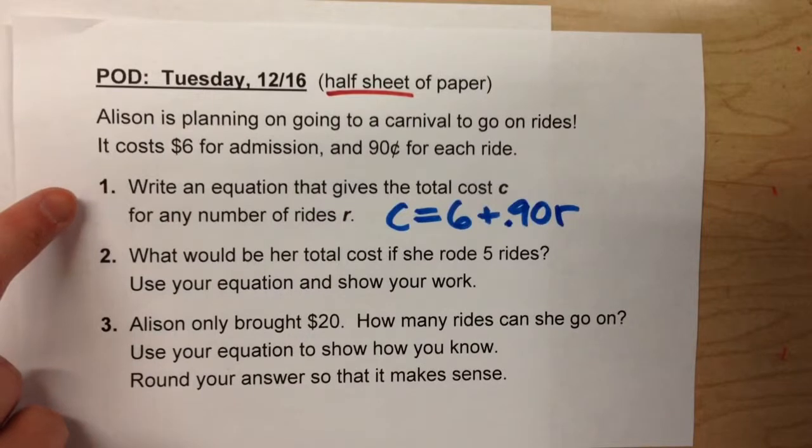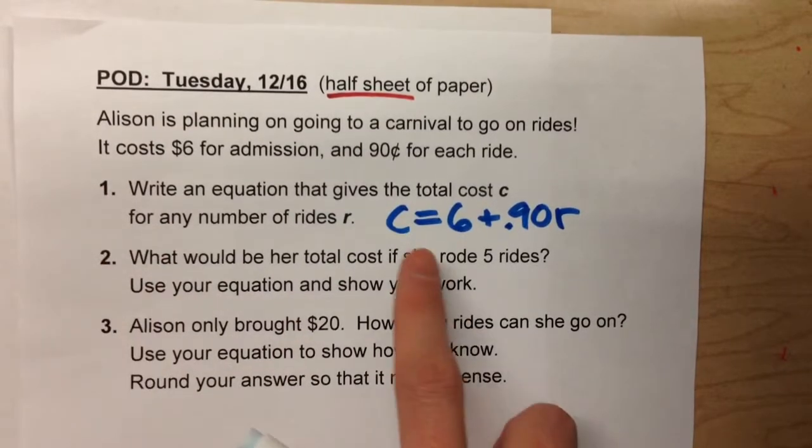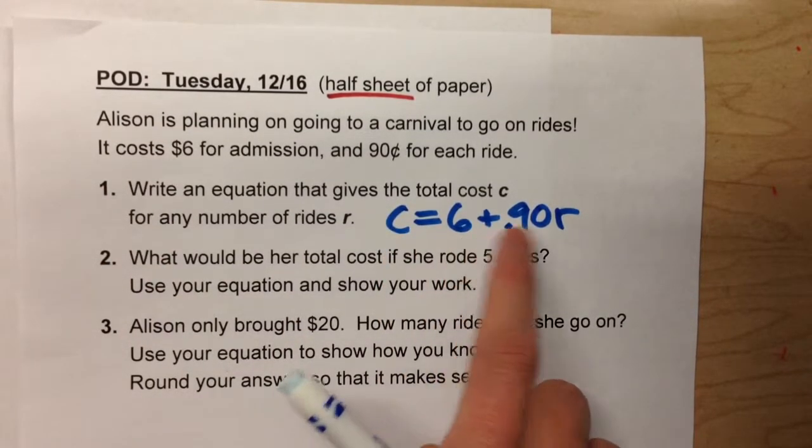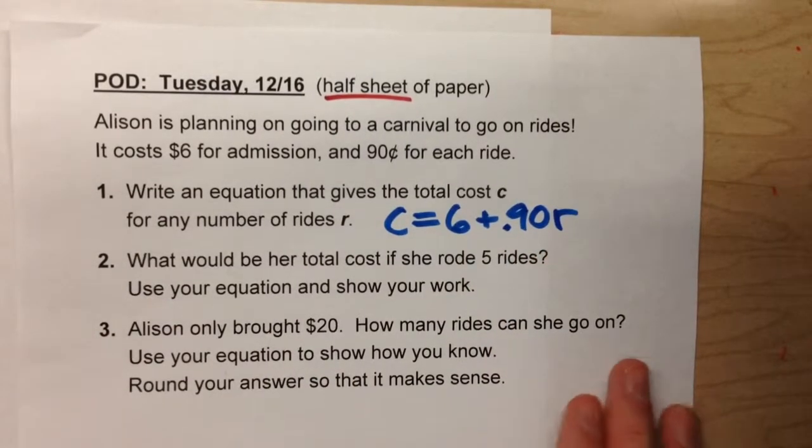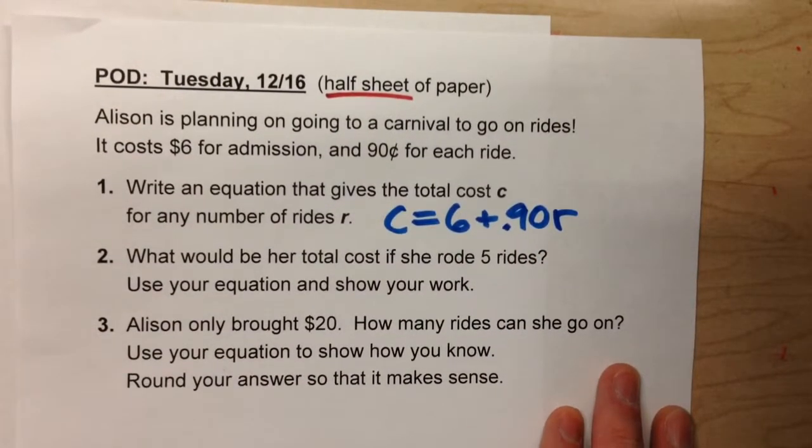So we started by writing an equation. The cost is equal to $6, that's the admission, plus $0.90 per ride. Now, up until now, we'd been using equations to solve this.